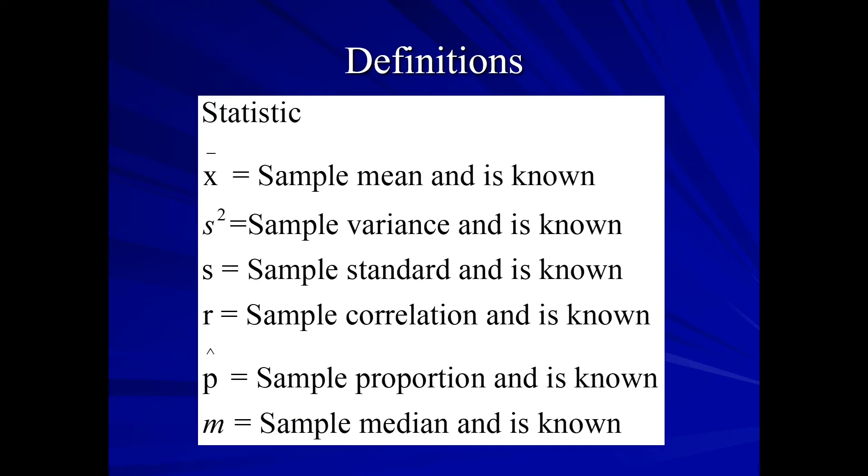Our statistics, however. Notice, these are all in regular English letters. X bar. That's our sample mean and it's known. And this represents our population mean mu. S squared. That's our sample variance and it's known. It represents our population variance. S is our sample standard deviation and it's known. It represents our population standard deviation. R is our sample correlation. It's known and it represents our population correlation. P hat. That's our sample proportion and it's known. It represents our population proportion. And then M is our sample median and it's known. It represents our population median.